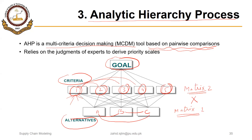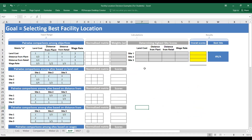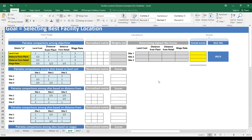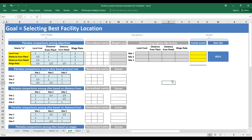We will get final values that tell us which alternative is best as a whole with respect to all criteria. We will solve the facility location problem using AHP with Excel — I recommend you solve along with me. Our goal is to select the best facility location, and we have identified four factors: land cost, distance from plant, distance from retail, and wage rate.